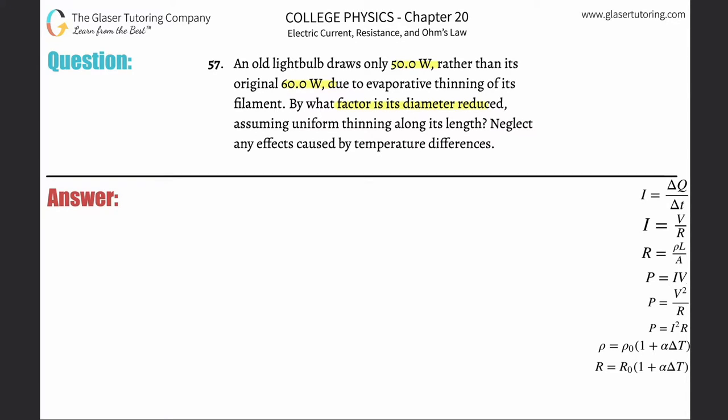So we're talking about by what factor is its diameter reduced. Now, if you look at the formulas on the right-hand side, there's only one formula that will have diameter in it. You might be looking through the formulas thinking, well, I don't see diameter. And you're right, I don't see diameter either directly, but I know diameter is going to be related to one of those variables over here in one of these formulas. Did you spot it?